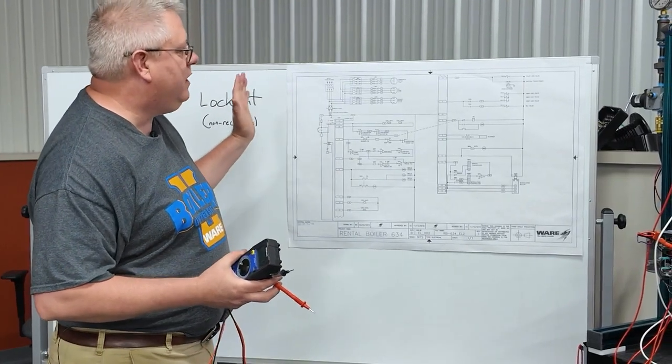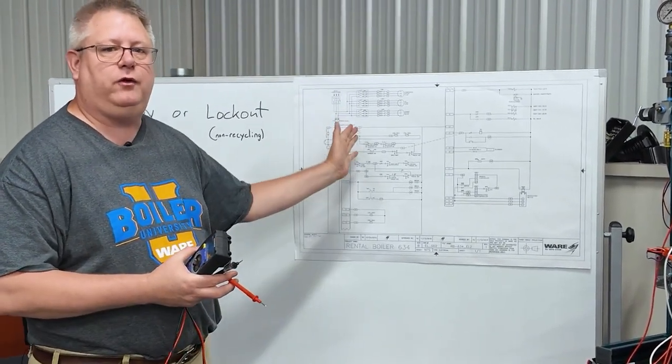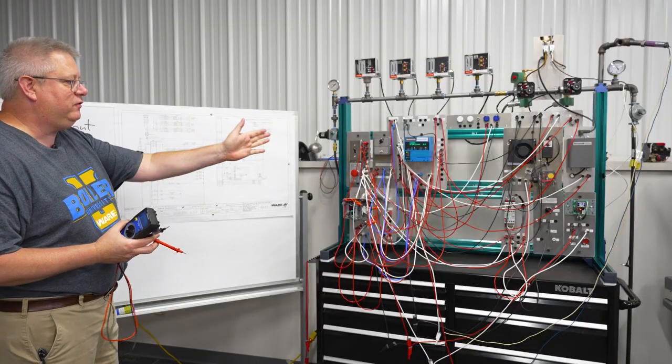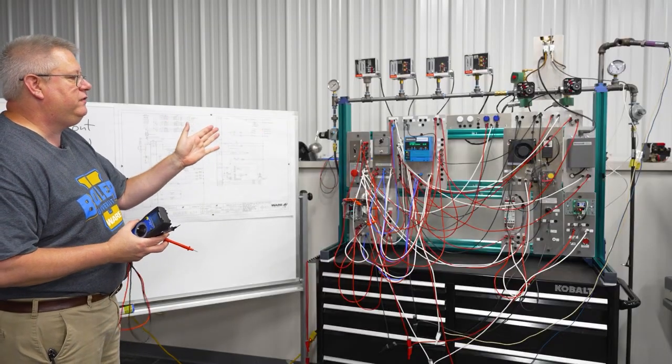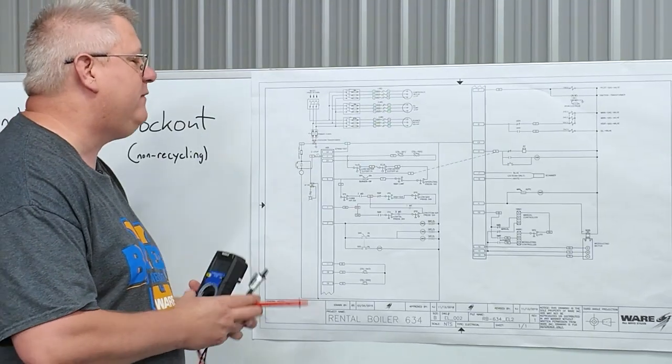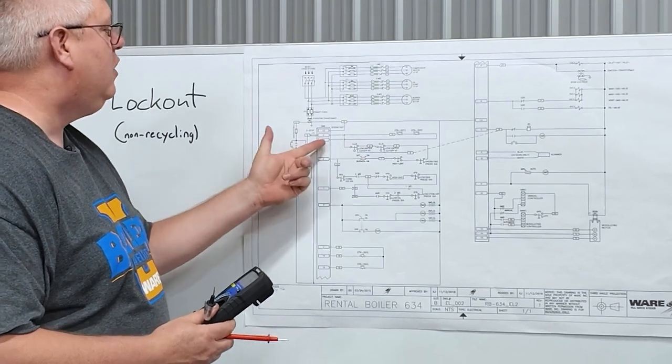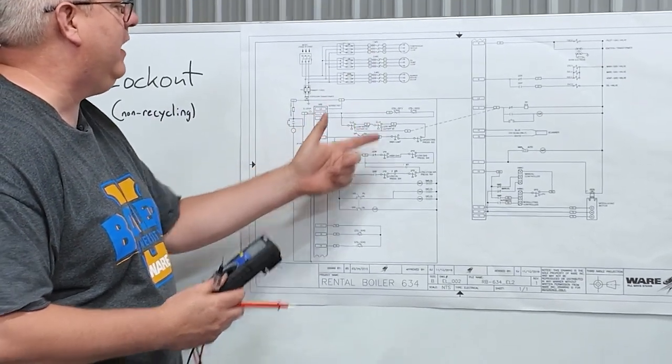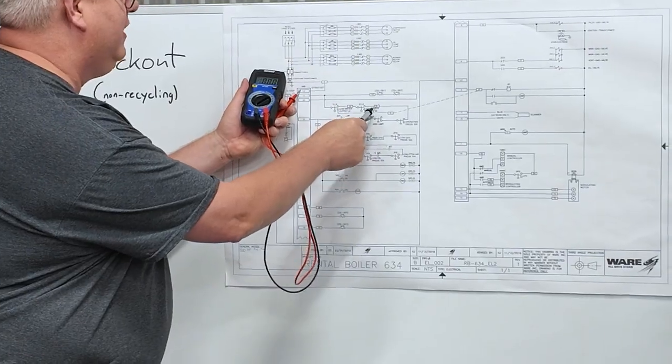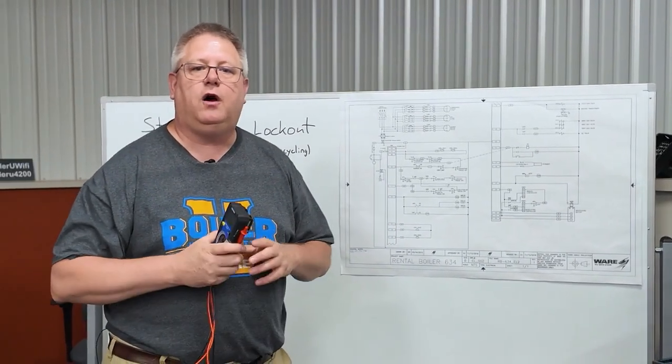The importance of a diagram is it really accelerates troubleshooting. On a unit without a print, I've got to chase wire through conduit to find which in a series of switches is tripped. But if I've got a print, I can simply look at the limit series and take a meter and test terminals in the panel and quickly narrow down where that problem is.